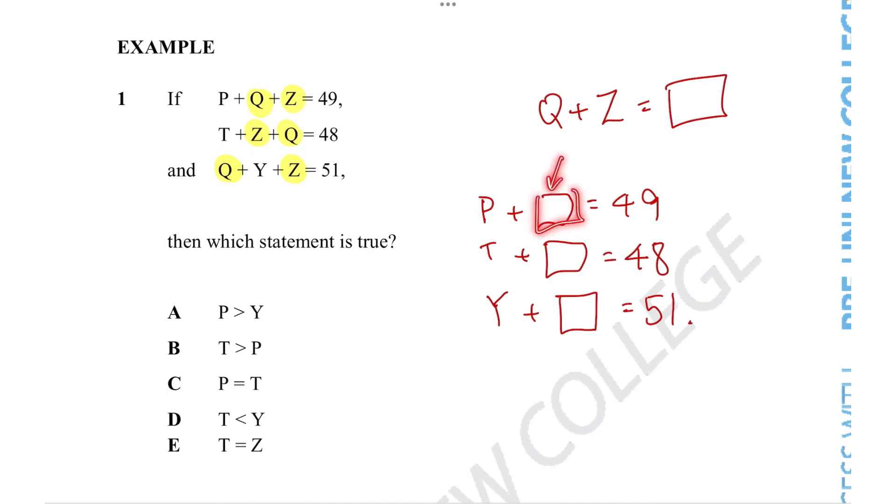Since we know that the box is the same number across these three equations, we can see that the only thing changing is these three letters' values. We can use that to our advantage to figure out which is the biggest number. If P plus square equals 49 but T plus square equals 48, we can realize that P must be smaller than T. The Pac-Man mouth will point towards the bigger number, so the mouth will point towards the P and face away from the T.